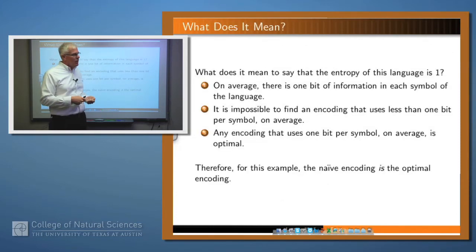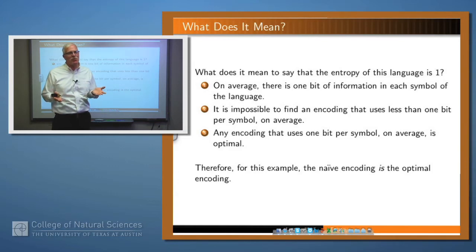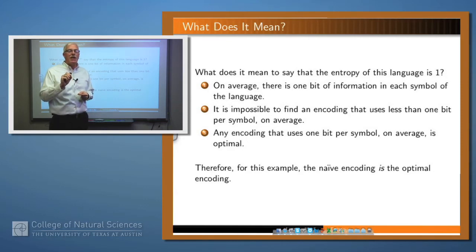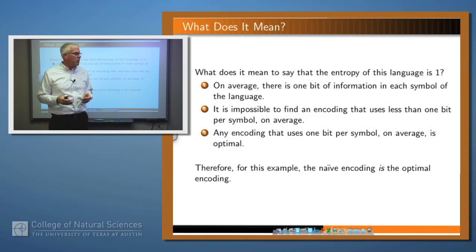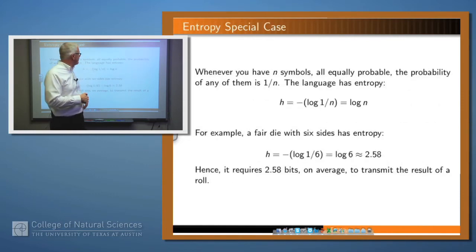So what does that one mean? It means several things. The first thing it means is that on average, each time you flip that coin you're generating one bit of entropy, or one bit of information. That's not really very surprising. But it also means the following: it's impossible to find an encoding for this language that uses less than one bit per symbol on average. That says that our naive encoding is the best we can do — we couldn't possibly find an encoding which is any better than that. And any encoding that uses one bit per symbol on average, as our naive encoding does, is optimal.